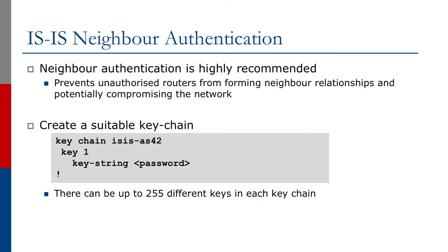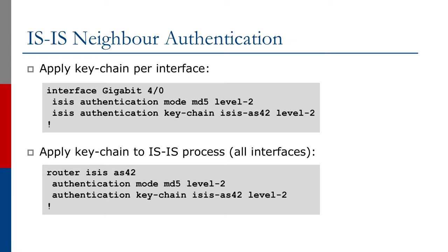Neighbor authentication is highly recommended — it prevents unauthorized routers from forming neighbor relationships and potentially compromising the network. You might argue that IS-IS usage is very limited across the internet, but it still doesn't prevent an enterprising third party from trying to compromise the infrastructure. The way to do it in Cisco IOS is to create a suitable keychain containing the key that will be used for neighbor authentication, and then that keychain is applied either per interface, which is less common, or applied to the entire IS-IS process, which is more common.